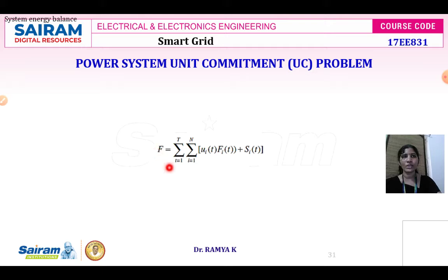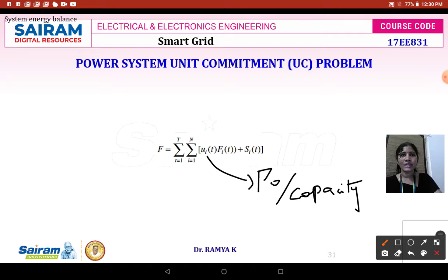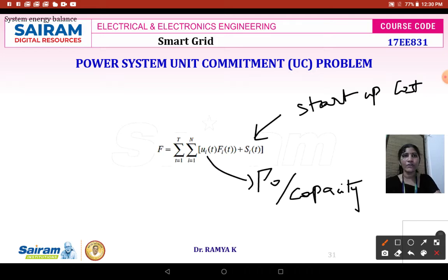The mathematical formula is: f equals summation t equals 1 to T, summation i equals 1 to N, ui(t) times fi(t) plus si(t). Here ui(t) is the ratio of your generation output to your capacity. si(t) is the startup cost of the ith unit at hour t. fi(t) is the fuel cost for the ith unit. N is the total number of units and T is the total time under which unit commitment is performed.